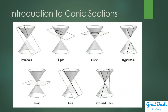So these are the sections of the cone that we shall discuss in conic sections: the parabola, the ellipse, the circle, and the hyperbola. And the degenerate cases are the point, the line, and two intersecting lines.